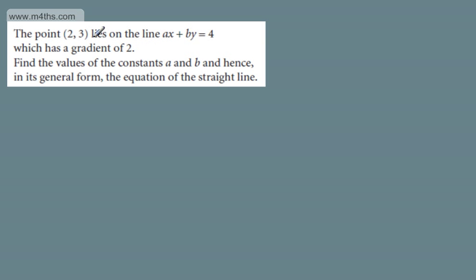What I'm going to do now is write two different equations in a and b and solve simultaneously. So, let's start off now with the point (2,3). I'm going to substitute these values in for x and y into this equation. If I do that, now I'm going to have 2a plus 3b is equal to 4, and I'm going to call this equation 1.